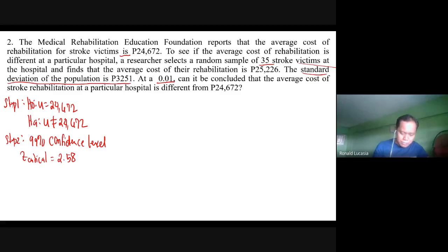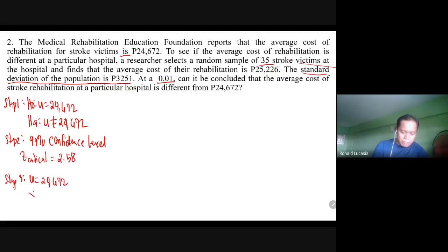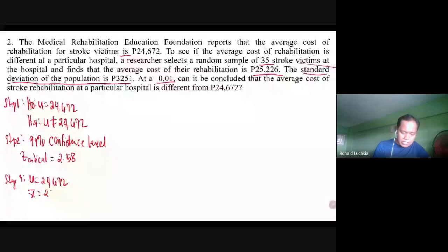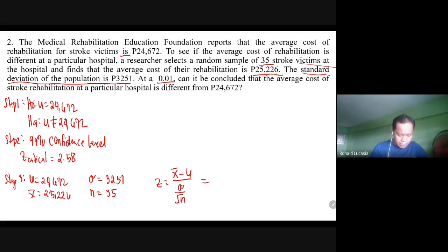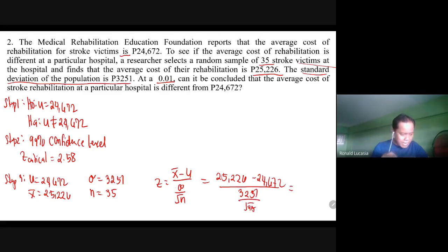Step three: computation. The given values are: population mean = 24,672; sample mean = 25,226; population standard deviation = 3,251; sample size n = 35. Using the Z-test formula: Z = (25,226 − 24,672) / (3,251 / √35). The computed Z value is 1.01.